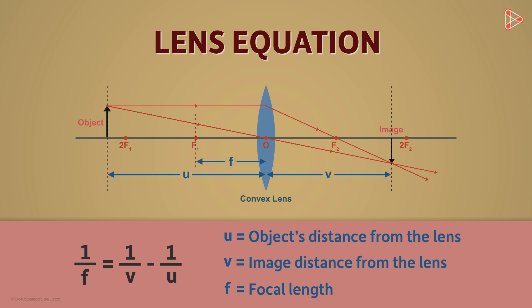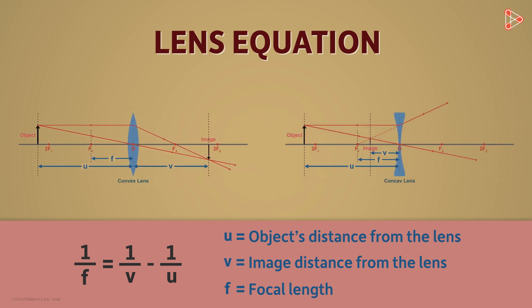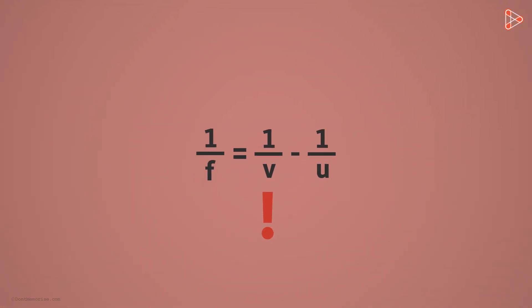This lens equation is valid for all spherical lenses as well as for any position of the object. However, we can't use this equation directly. There are some sign conventions that we must follow before using it. And what are those conventions?